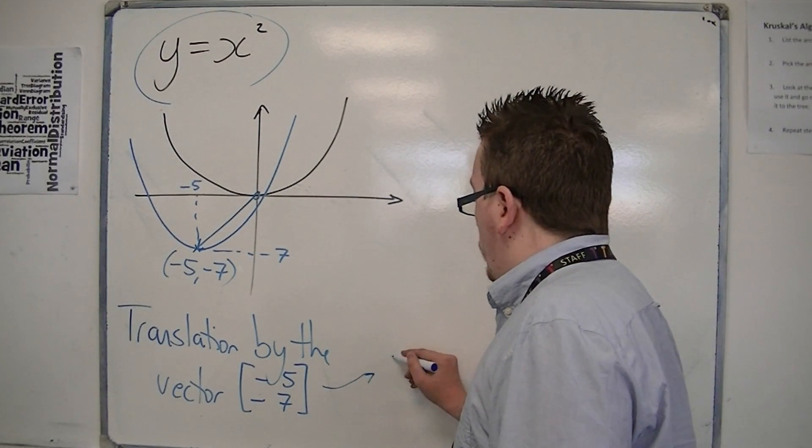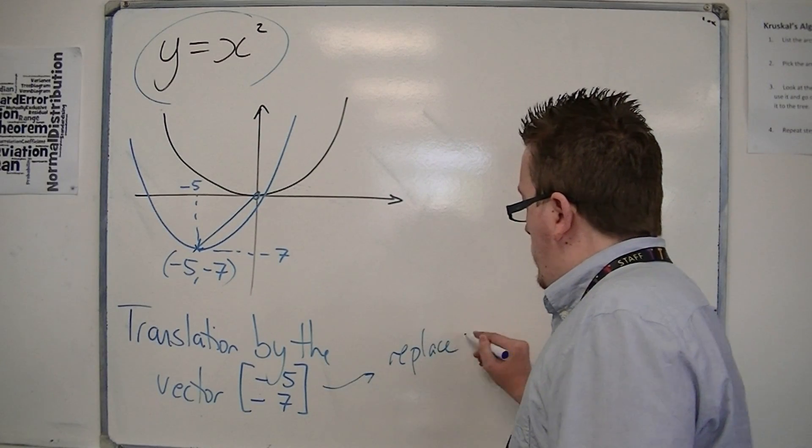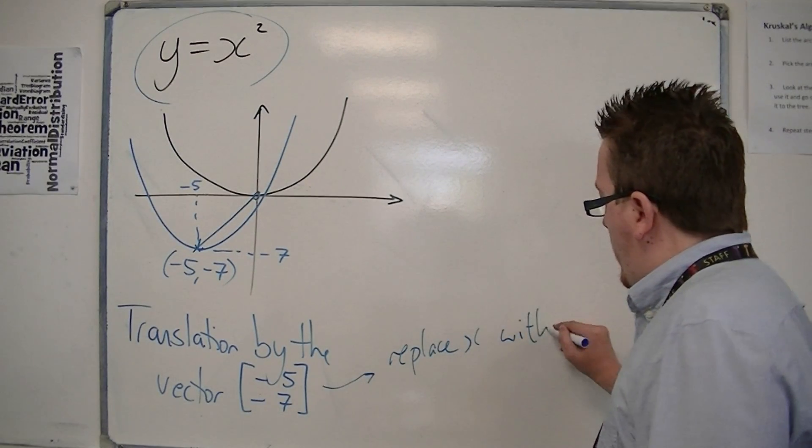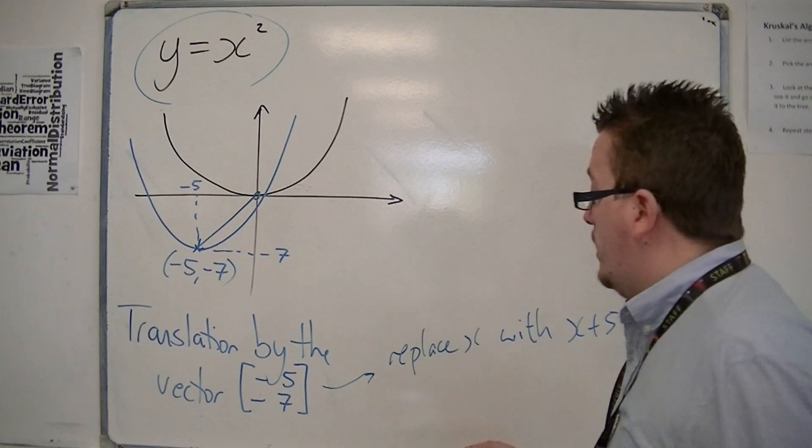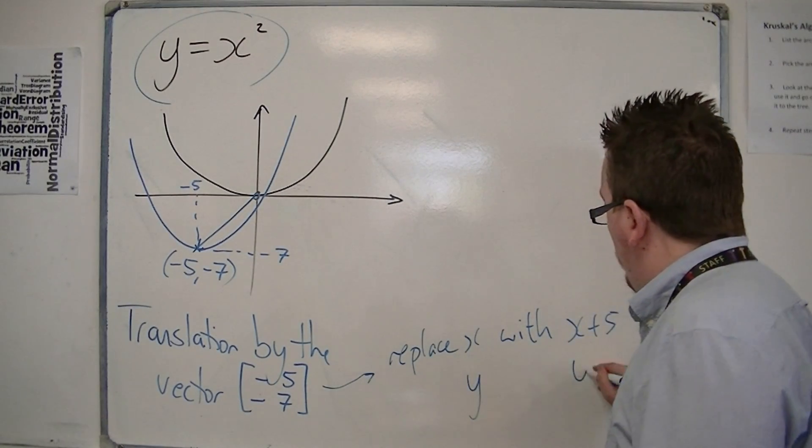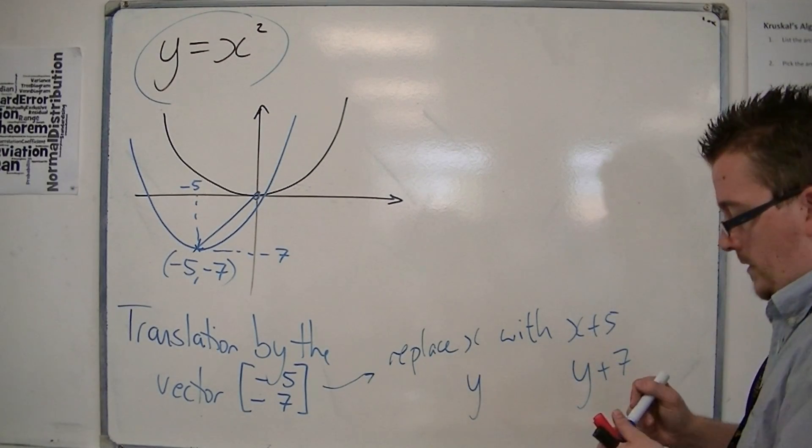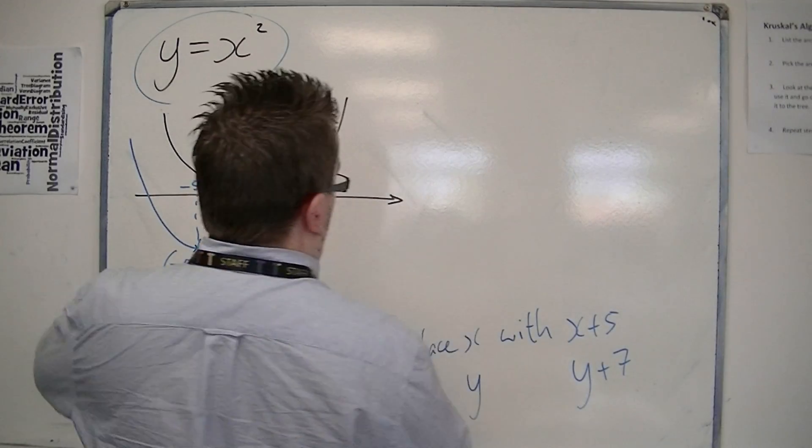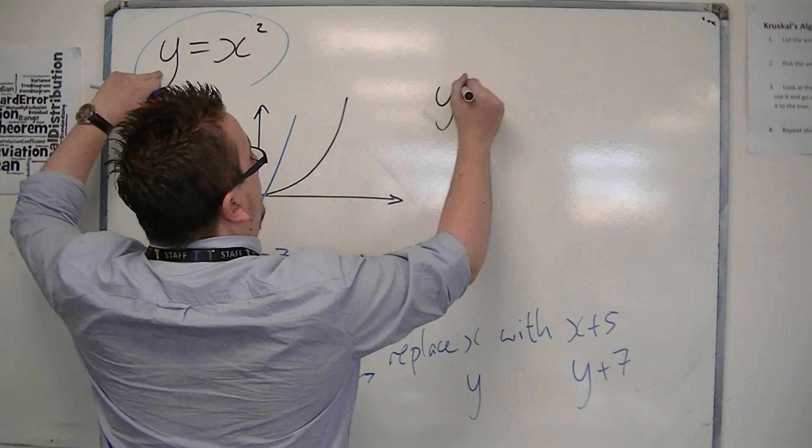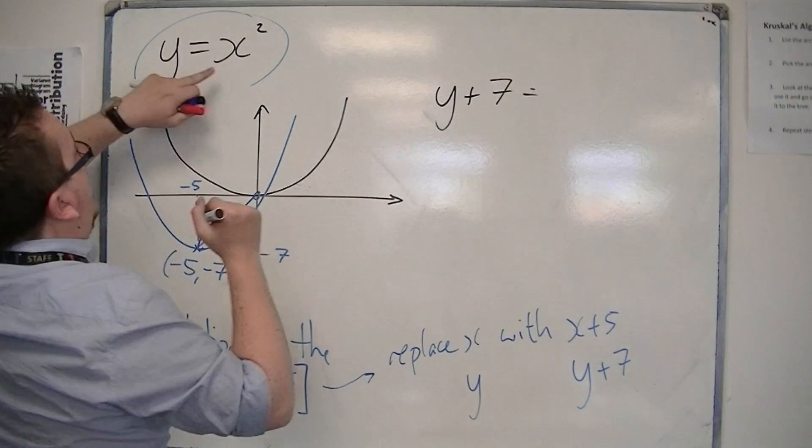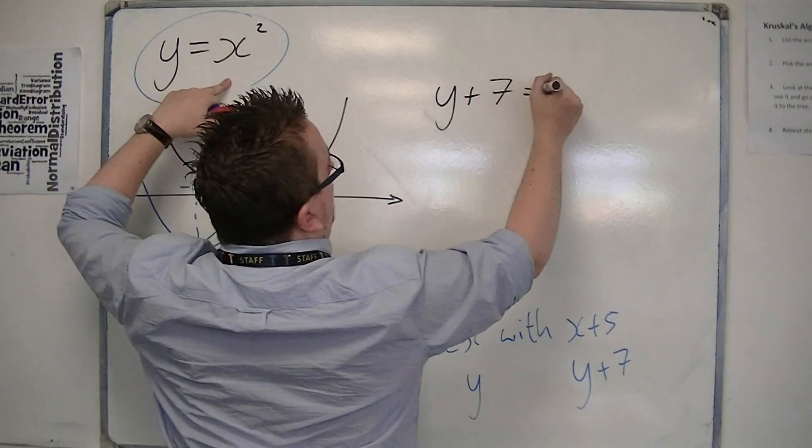Replace x with x plus 5 because remember the sign always changes. And replace the y with y plus 7. So the y becomes y plus 7 and the x becomes x plus 5.